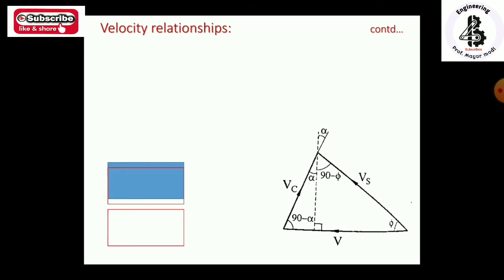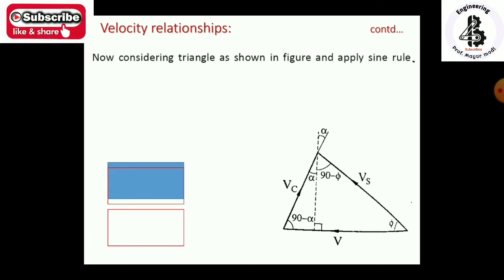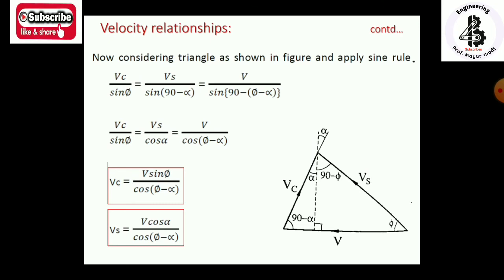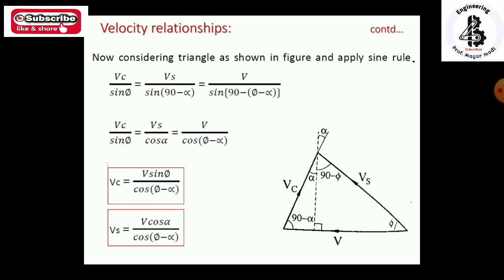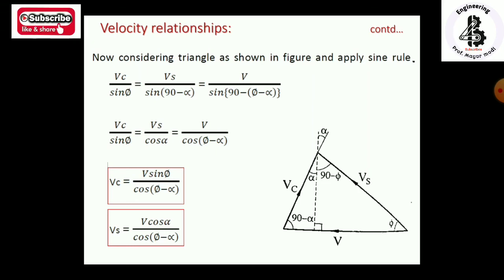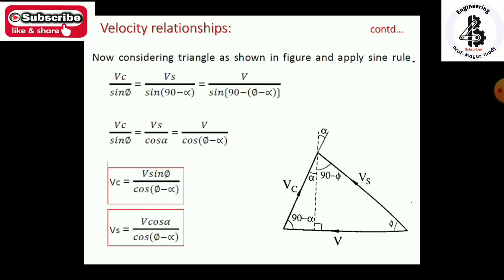Considering the velocity triangle and applying the sine rule: Vc / sin φ = Vs / sin(90° − α) = V / sin(90° − φ + α). Simplifying: Vc / sin φ = Vs / cos α = V / cos(φ − α). Therefore: Vc = V·sin φ / cos(φ − α) and Vs = V·cos α / cos(φ − α). These are the velocity relationships for metal cutting operations.